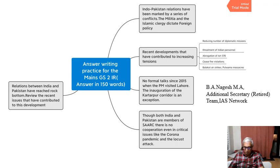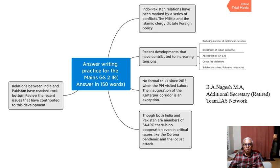Even during the locust pandemic, when locusts crossed over from Pakistan into Rajasthan, Pakistan did not share information with India regarding the locust attack. So, to summarise: we gave an introductory discussion on who determines foreign policy, then highlighted important developments that have affected relations, and also pointed out how even on emergency issues like COVID and the locust attack, there has been no cooperation between both countries.